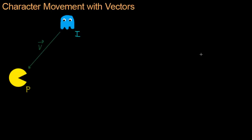Here we are again with Enki and Pac-Man. The problem we want to solve is finding the distance from Enki to Pac-Man — how far Enki has to go to get to Pac-Man. We already have the vector that Pinky wants to travel along to get to Pac-Man, and we can use that to find the distance, because the length of the vector is exactly the same thing as the distance Pinky has to go to get to Pac-Man.